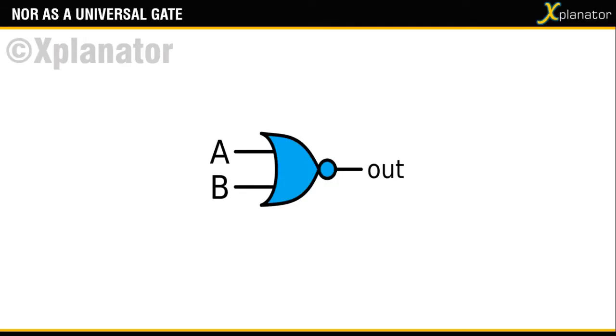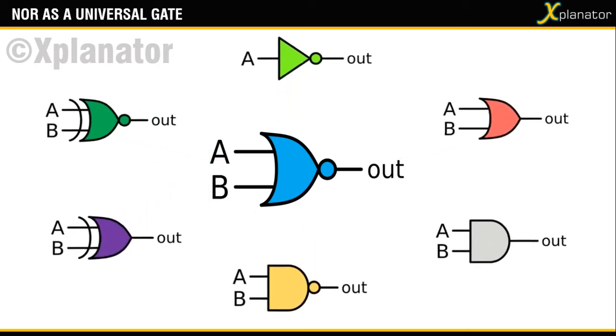A logic gate is called universal if it can be used to construct all other gates. NAND and NOR are called universal for the same reason.